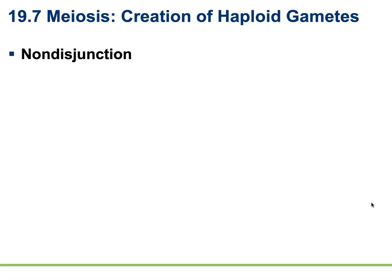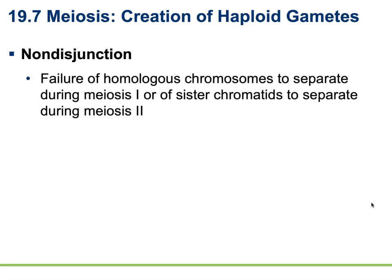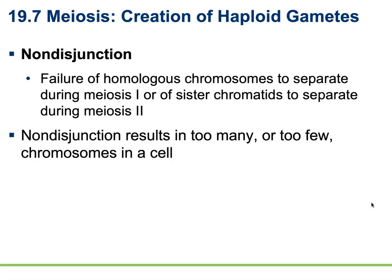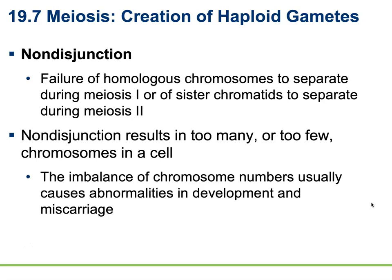The last thing we're going to talk about is when things go wrong — homeostatic imbalances of meiosis. One of those could be non-disjunction. Non-disjunction occurs when there's a failure of the homologous chromosomes to separate during meiosis I, or of sister chromosomes to separate during meiosis II. We did not lock down and check our mitotic spindles before separation. Non-disjunction is going to result in too many or too few chromosomes in a cell, and this usually causes abnormalities in development and most frequently results in miscarriage.